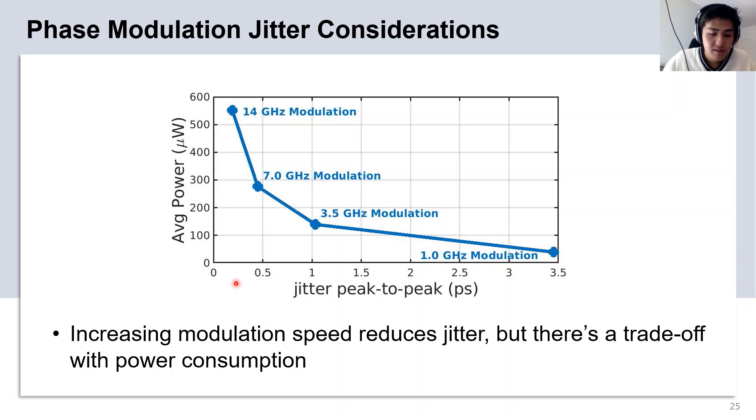However, the big trade-off with modulation frequency is power consumption. As we double the modulation frequency, we also double the average power of the digital sub-circuit. For our design, we chose a 7 GHz modulation frequency, which again is half the frequency of the ILO's injection clock.